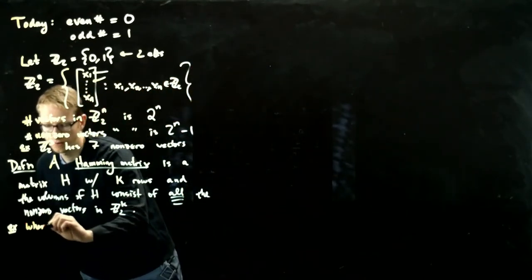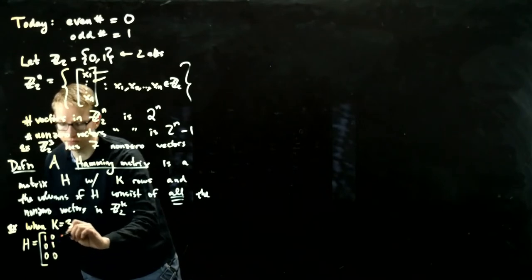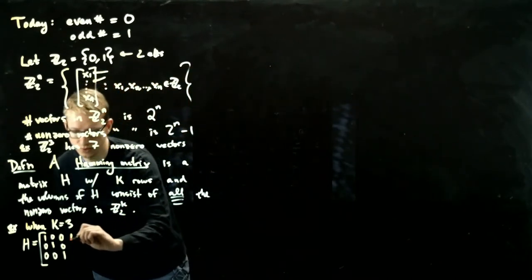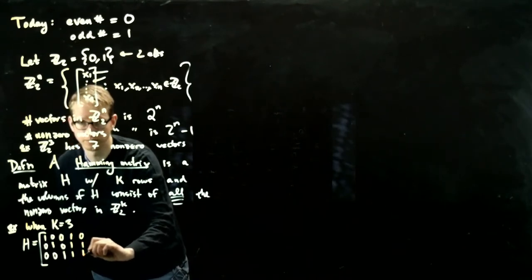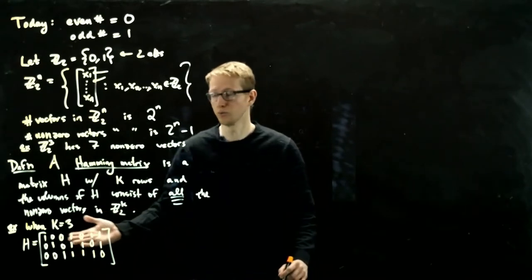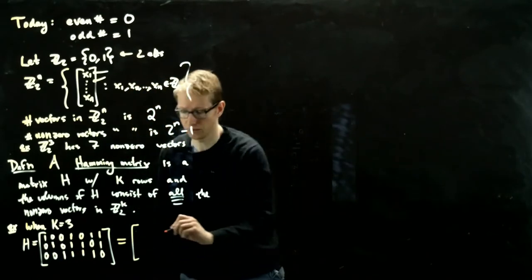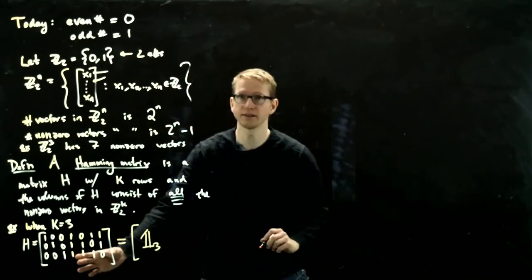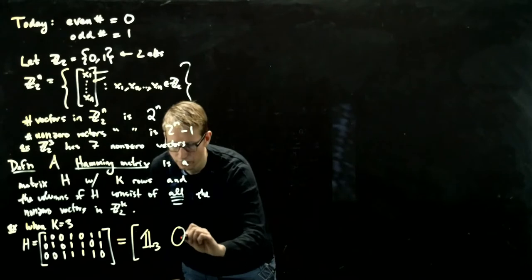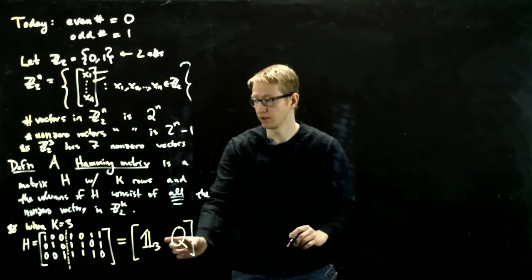So for example, when k equals 3, we can write H to be 1, 0, 0, 0, 1, 0. So I'm going to write the unit vectors first for the first three columns. And then we'll write everything else. And I'll also choose a specific order for this, though this part is less relevant in terms of ease of computations. So notice that this matrix, when you write it in this order, at least part of it has a very nice form. The left-hand side of this matrix is the identity 3x3 matrix. And the right-hand side is just another matrix consisting of all the non-zero vectors excluding the unit vectors, so we'll just call that Q for now. So I've just artificially divided this matrix into a 3x3 and a 3x4 matrix.